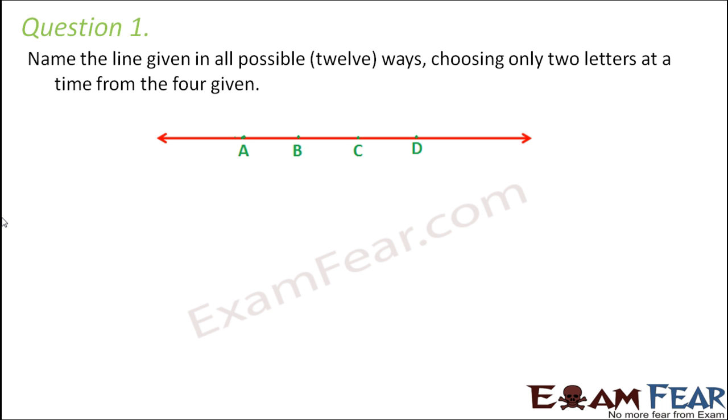Now we already discussed that how do we represent line. We represent line with two letters at a time. Now some of the ways by which we can name this line are AB. So AB could be one name. It could also be AC, it could be AD.